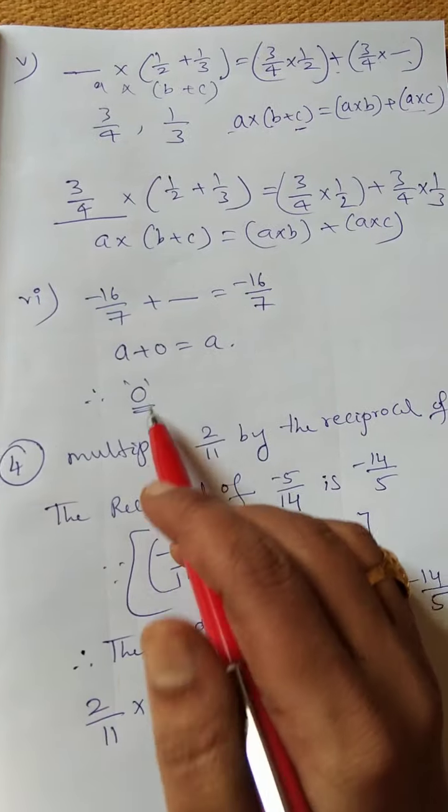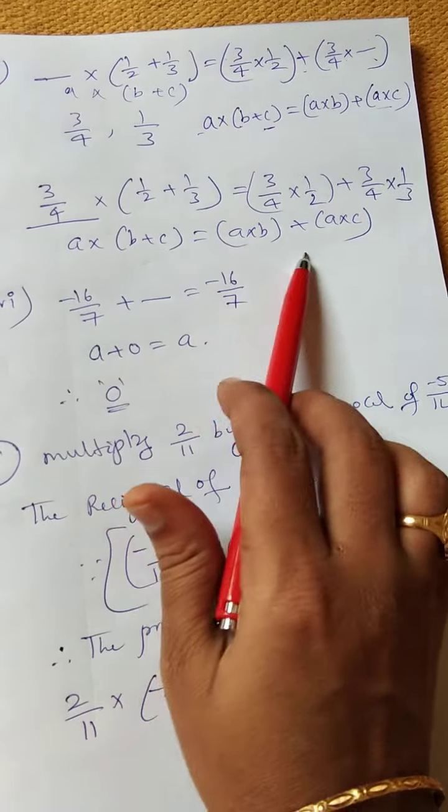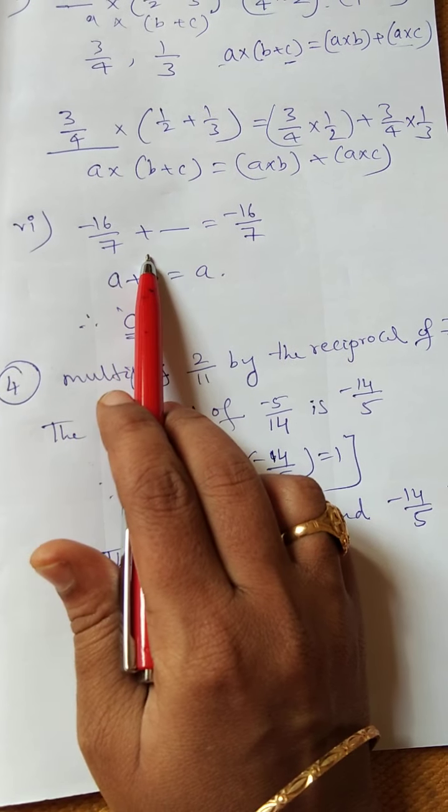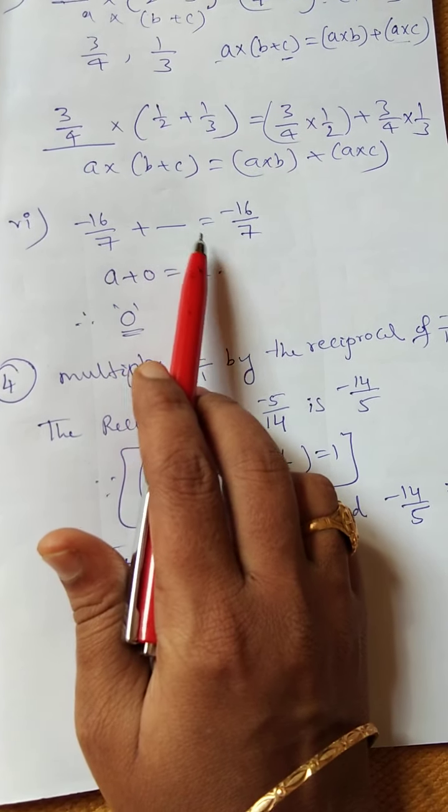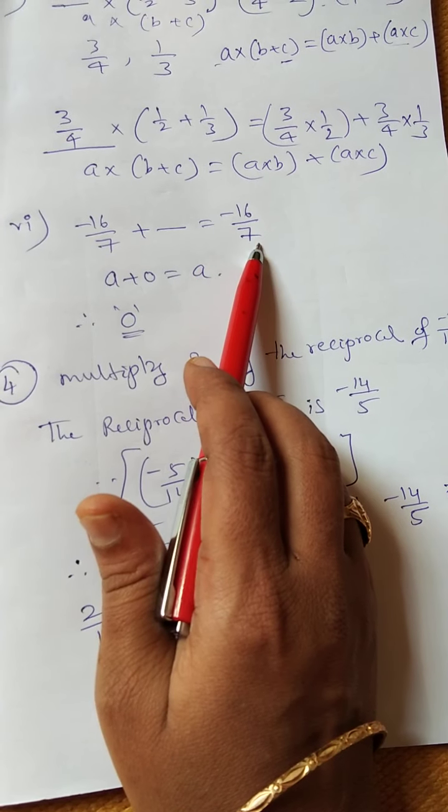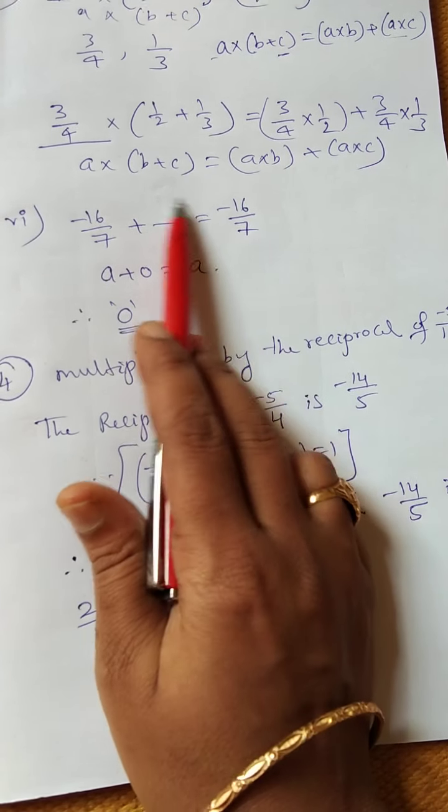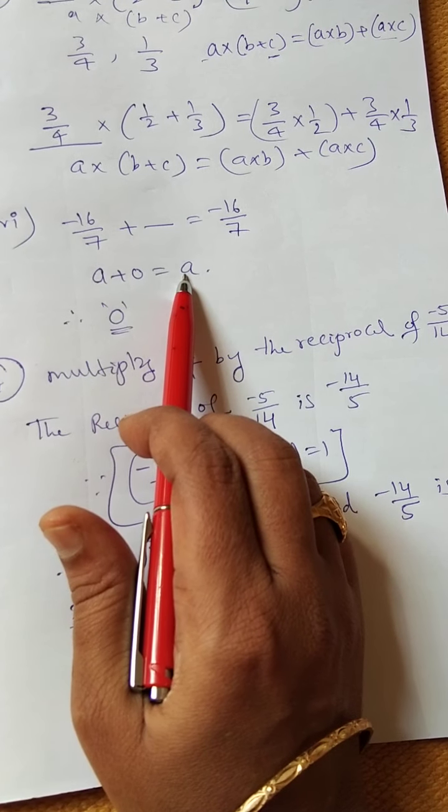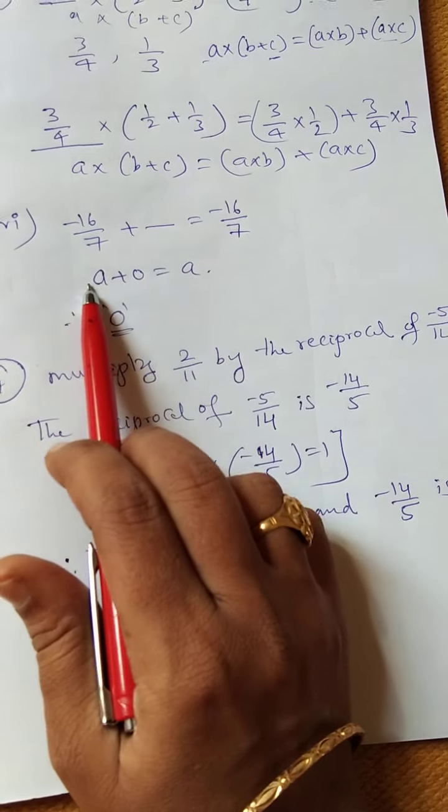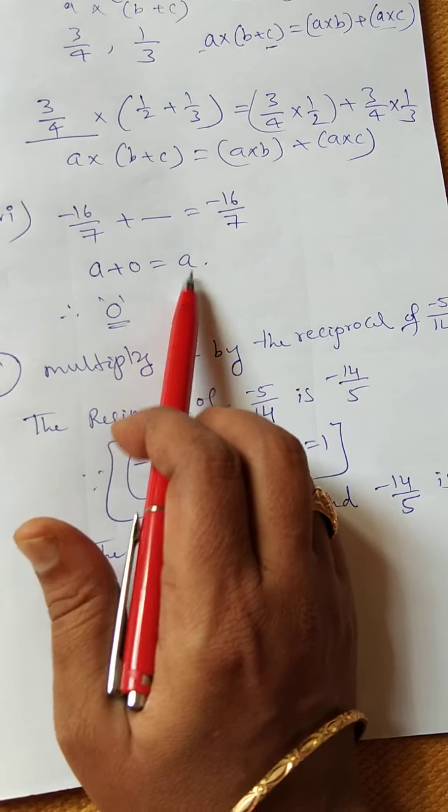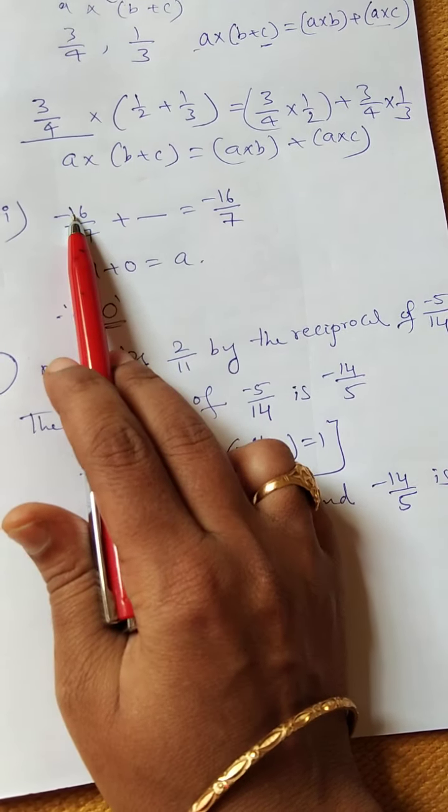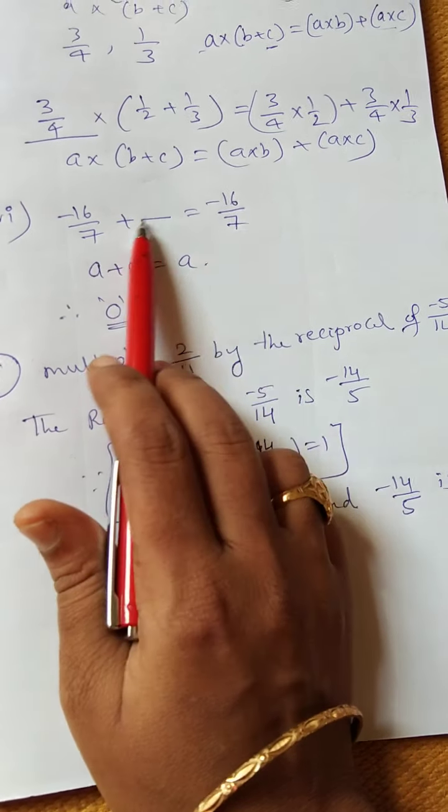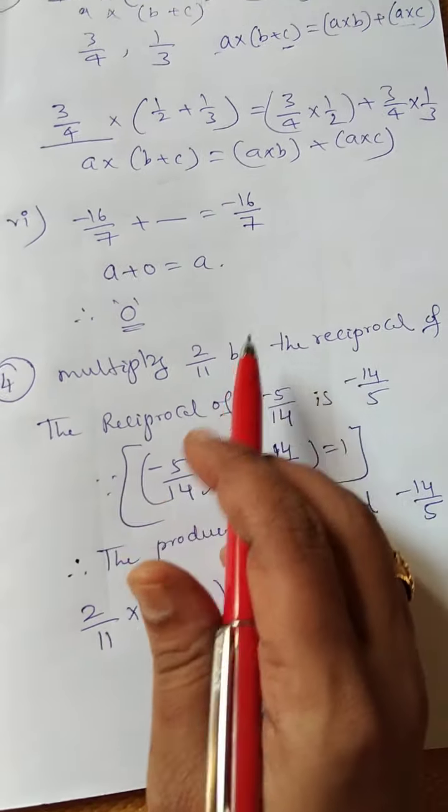Sixth part: -16/7 + blank = -16/7. This involves the additive identity property: A + 0 = A. If you add 0 to any number, you get the same answer. So adding 0 to this number gives -16/7. The blank is 0.